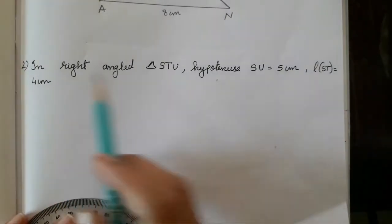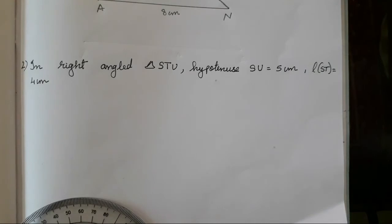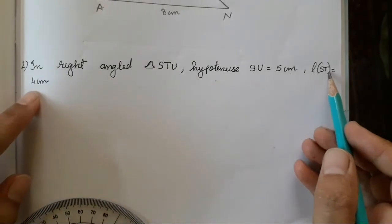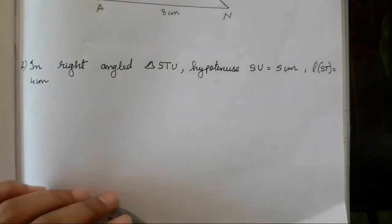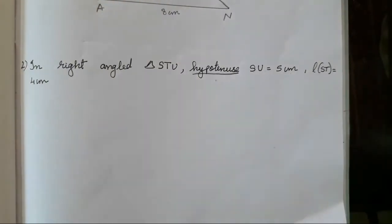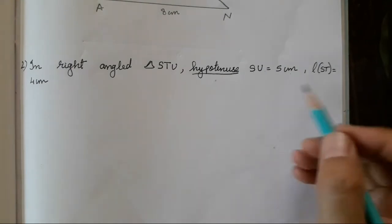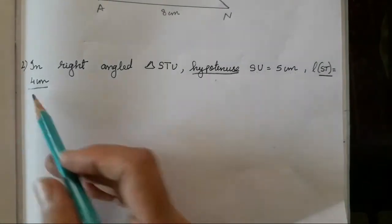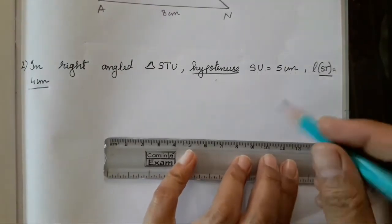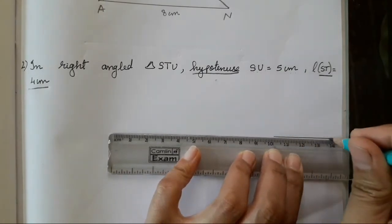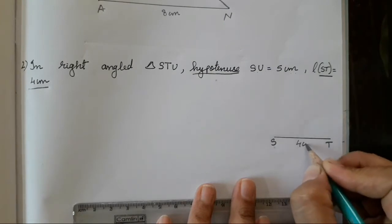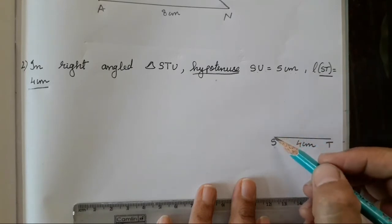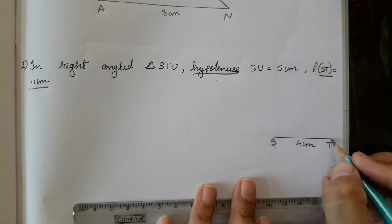Triangle STU. You have to see which angle is supposed to be 90 degrees. They haven't stated it explicitly, so from the given information — SU is 5 cm, ST is 4 cm — you have to decide. SU is the longest side, so SU is the hypotenuse. That means ST is the base, and angle T is supposed to be 90 degrees.